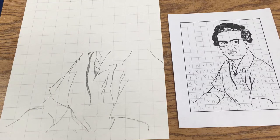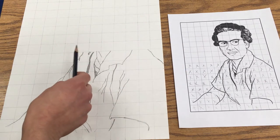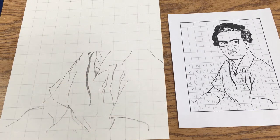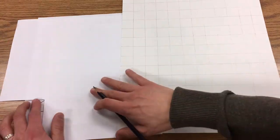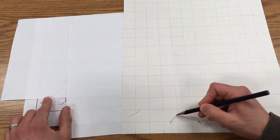We're going to be enlarging this picture here on this piece of drawing paper, and the way this is done is by making a grid and copying just one square at a time and enlarging it as you go.